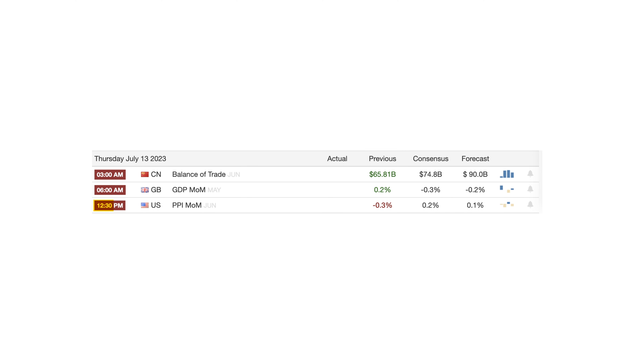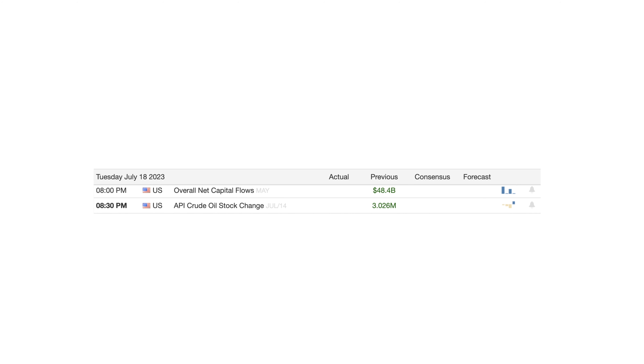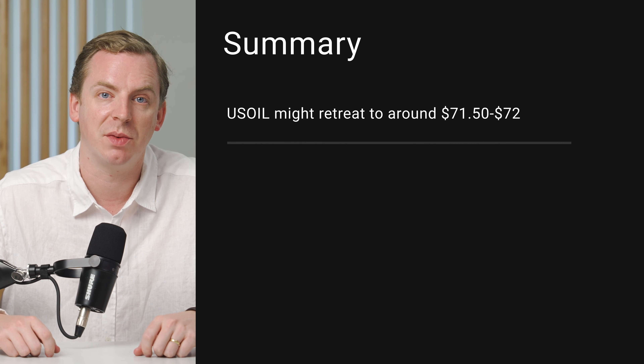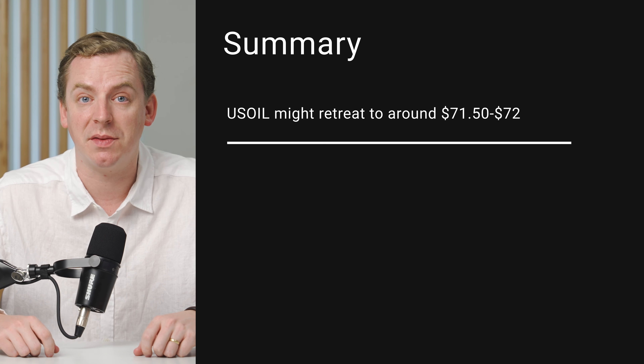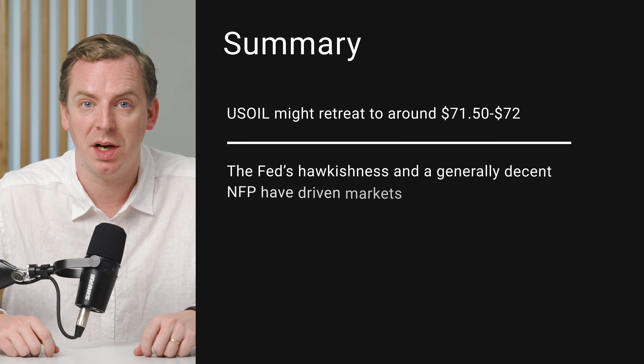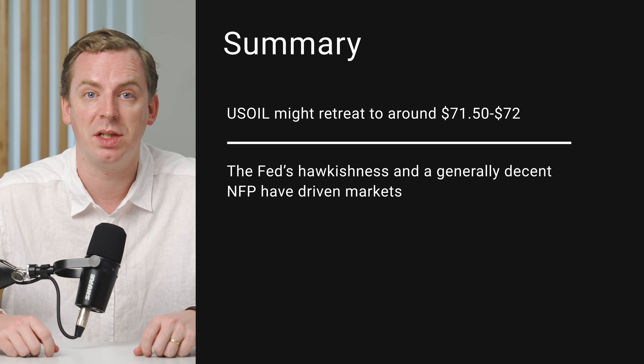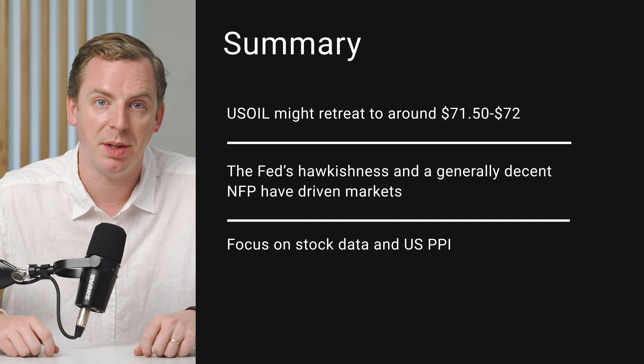And for traders who were to take that position, what do you think are some of the most important releases or items of news that they would need to be monitoring over the next few days? So in terms of economic data, we have the monthly US Producer Price Index on Thursday the 13th, as well as the crude oil stock change by the American Petroleum Institute on Tuesday the 18th. In summary, the idea for a potential trade this week is a potential sell for American light oil with a possible target around 71.50 or 72, and the primary narrative driving that is the Fed's relatively high hawkishness. Traders who were to take the position would need to monitor regular stock data from the USA and PPI as well.